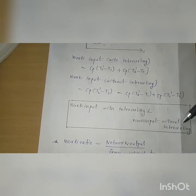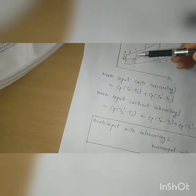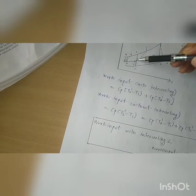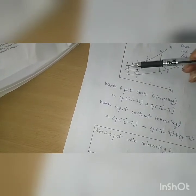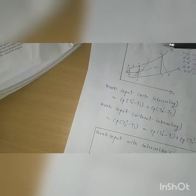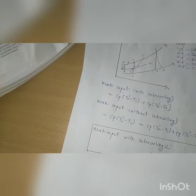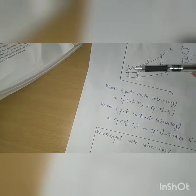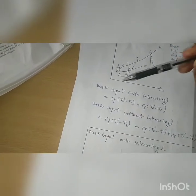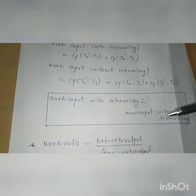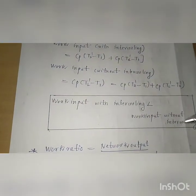Work input with intercooling is less than work input without intercooling. Without intercooling, the area on the T-S diagram is larger. The area with intercooling is less than the area created by L2. Therefore, the conclusion is: work input with intercooling is less than work input without intercooling.